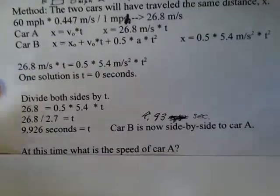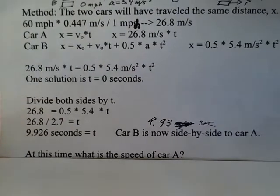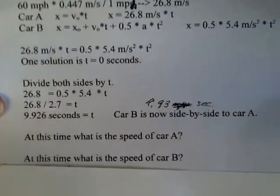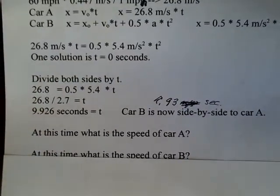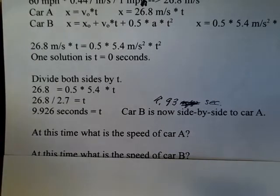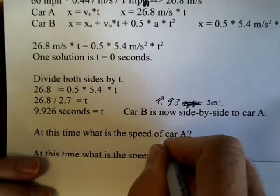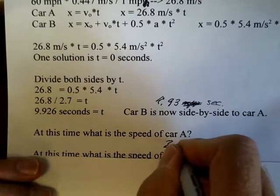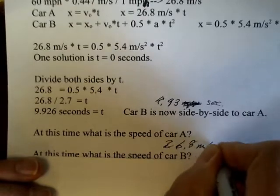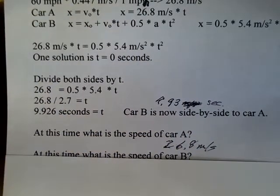But additionally, I'm interested in what's the speed of car A and what's the speed of car B. Can you tell me right now what the speed of car A is after it's been traveling for 9.93 seconds? Car A is traveling at constant speed, 60 miles per hour. So it's still 60 miles per hour. It's still 26.8 meters per second.